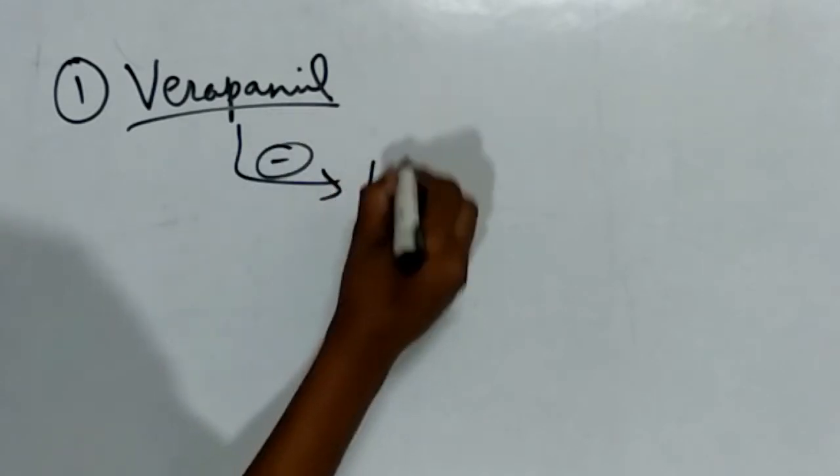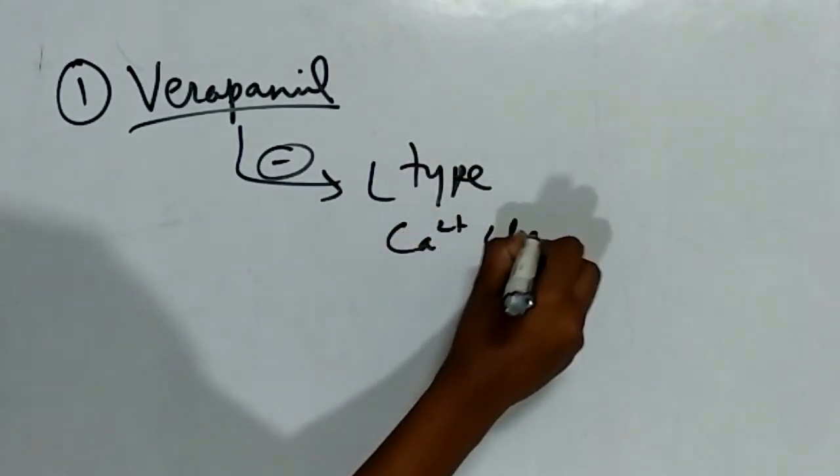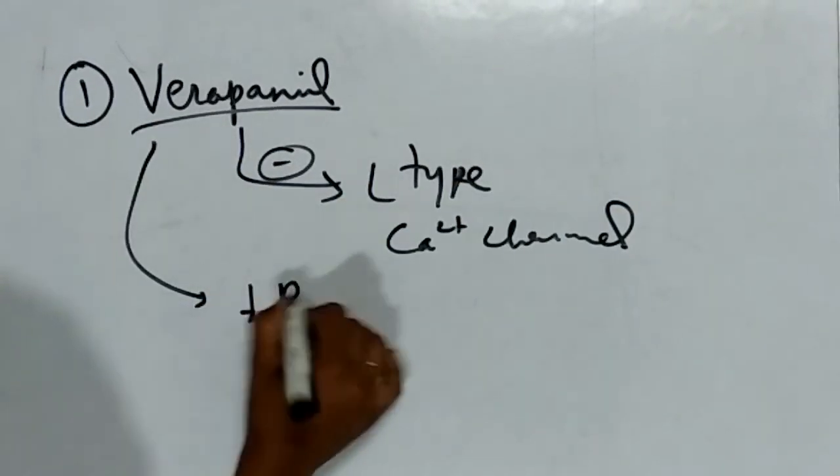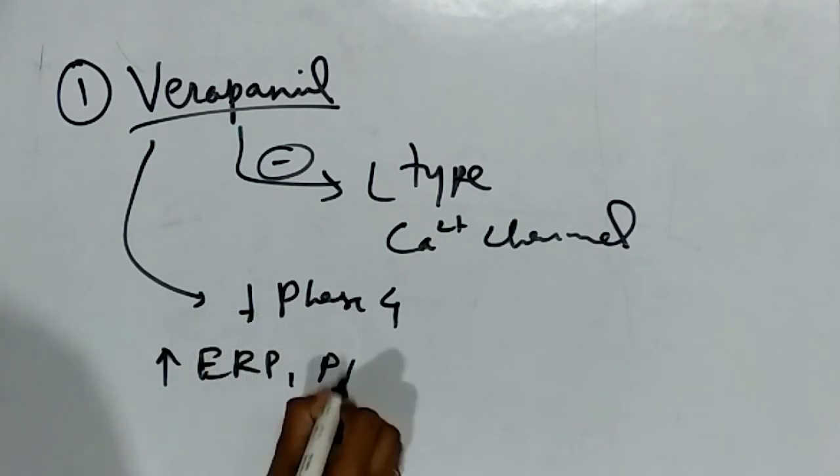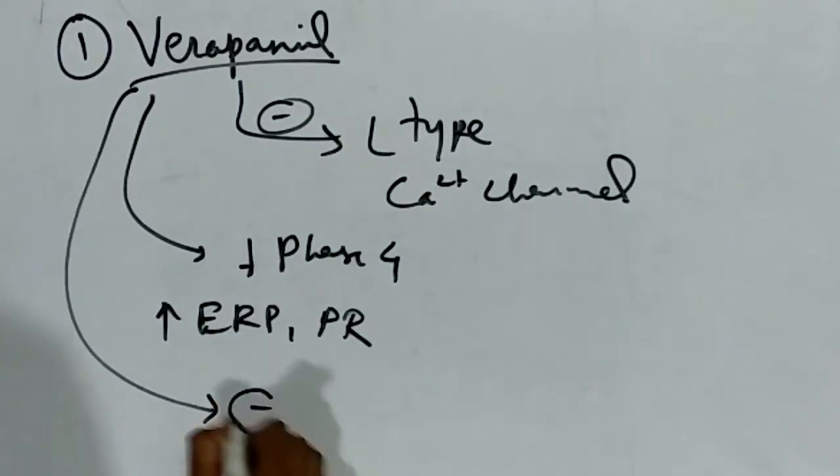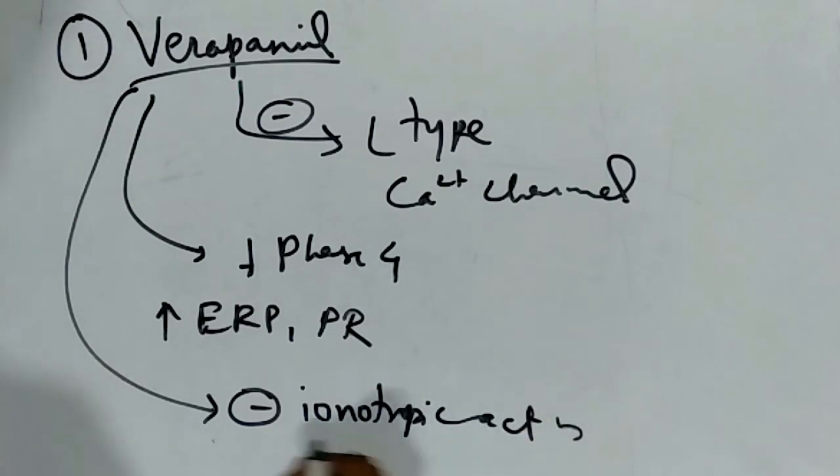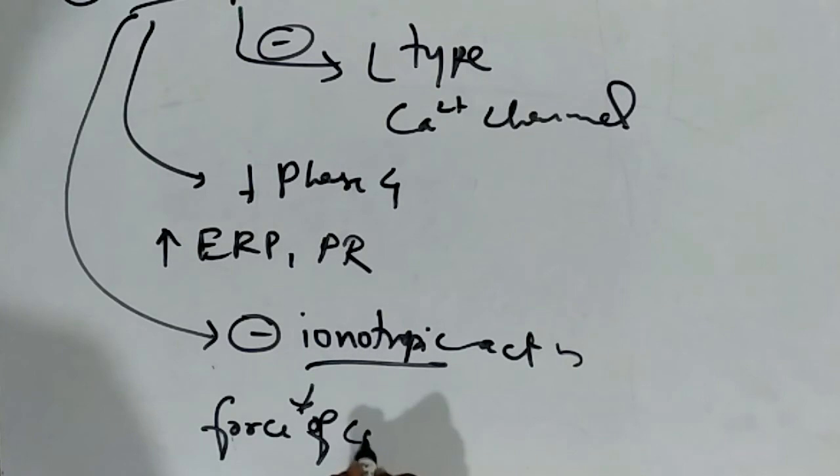The first drug under this class is verapamil. Verapamil inhibits L-type calcium channels. It decreases phase 4, increases ERP and PR, and also inhibits inotropic action. Inotropic means force of contraction, so force of contraction is decreased.